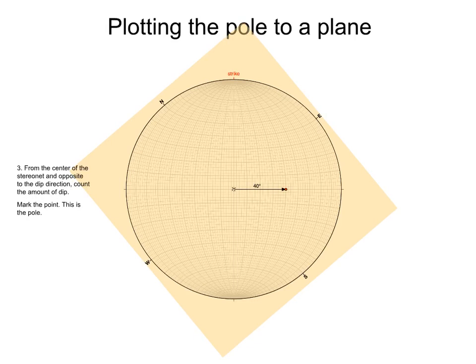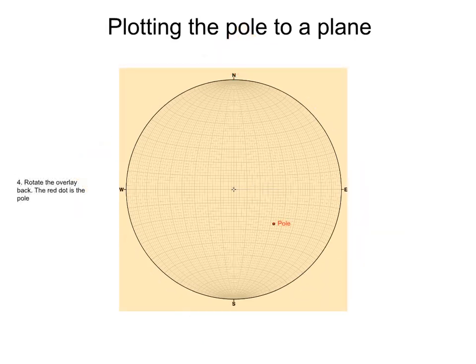Now, from the center of the stereonet and opposite to the dip direction, we count the amount of dip, in this case 40 degrees. We mark the point. This is the pole. We rotate the overlay back. The red dot is the pole to the plane.